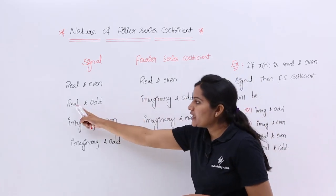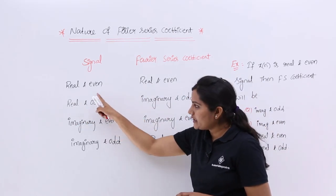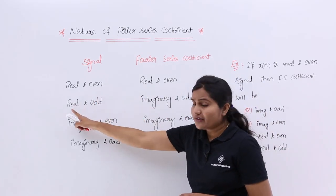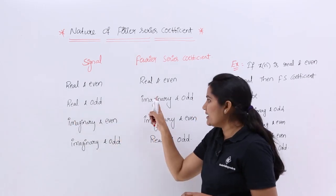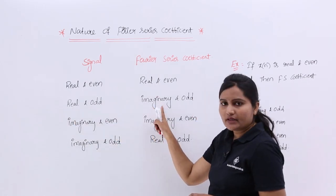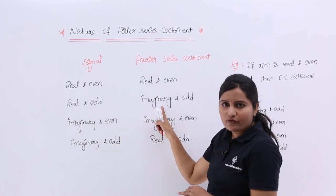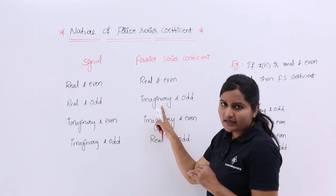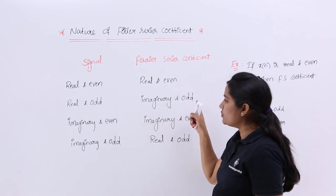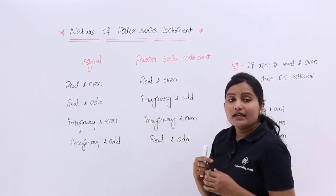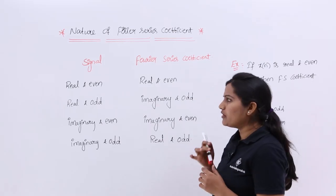If the signal is real and odd, when you see 'odd' here, that changes 'real' to 'imaginary'. So the Fourier series coefficient, if calculated for that signal, will be imaginary and odd.